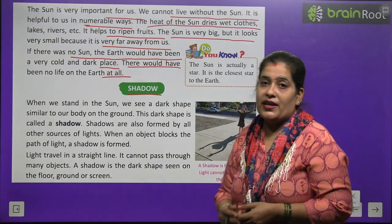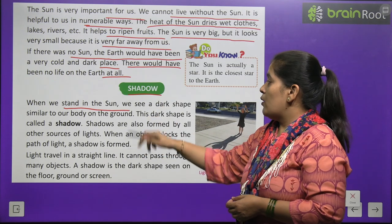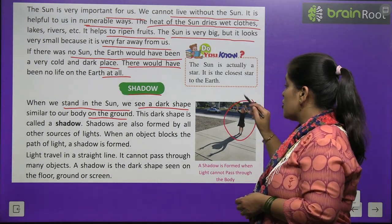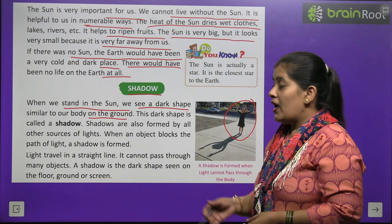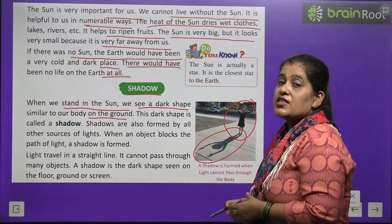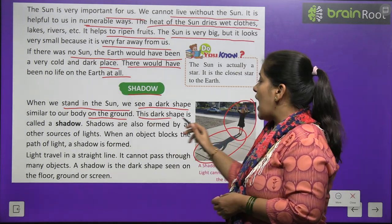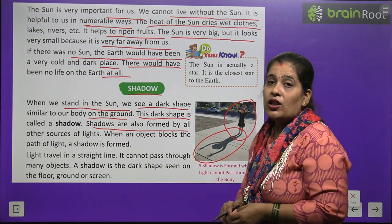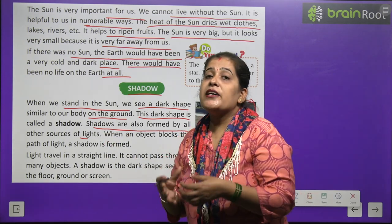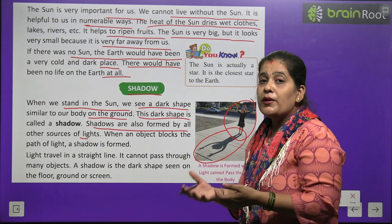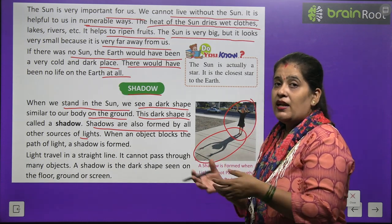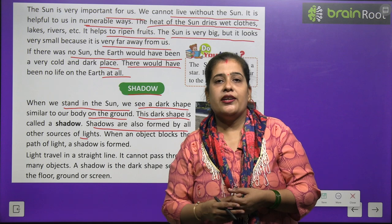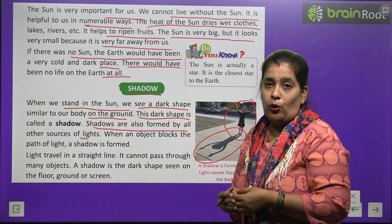Now we will learn about shadow. Ab hum parchhai ke baare mein padhenge. When we stand in the sun, we see a dark shape similar to our body on the ground. Jab aap suraj ki roshni mein khade hote hain, toh aap apne jaisi ek kaali shape dekhte hain, jise hum parchhai kehte hain. Shadows are also formed by all other sources of light — jaise street light ke neeche khade ho toh bhi aap apni shadow dekh payenge.